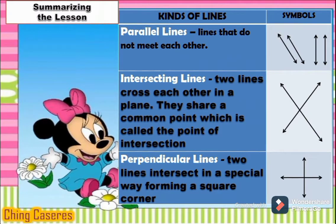Okay, children, do not forget: parallel lines are lines that do not meet each other. Intersecting lines are two lines that cross each other in a plane and share a common point called the point of intersection. Perpendicular lines are those lines that intersect in a special way forming a square corner.